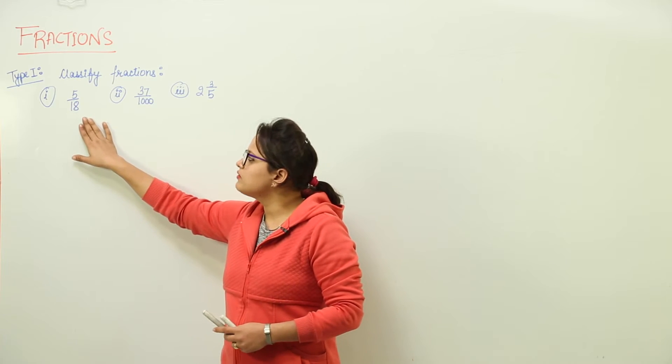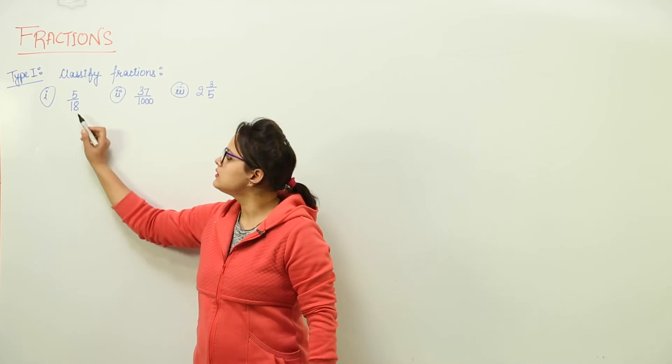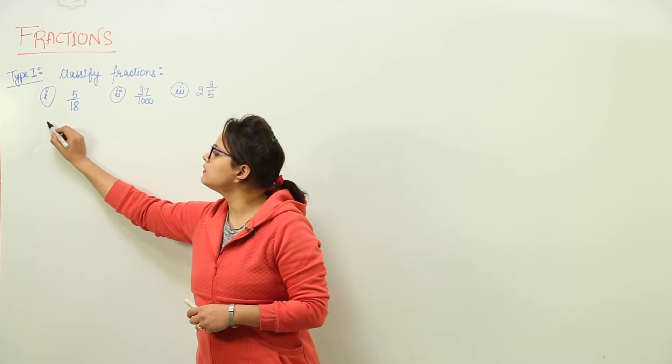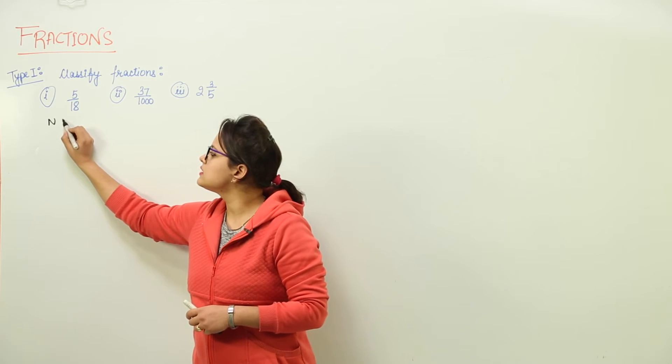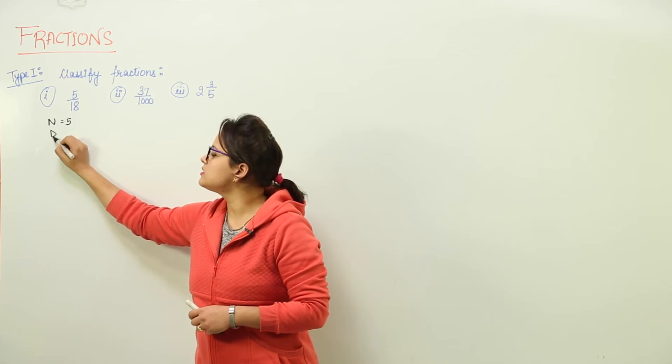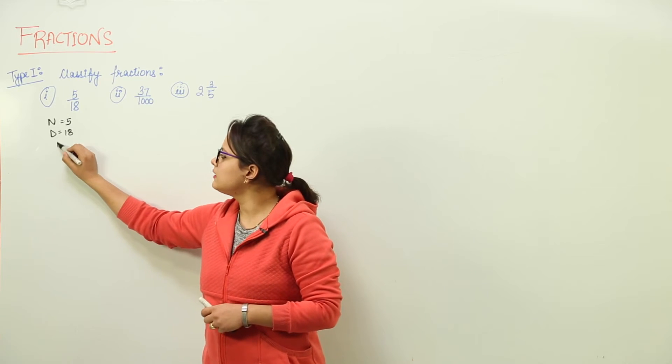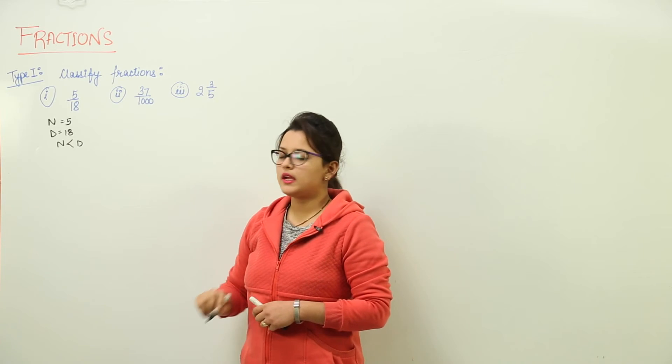The first one is 5 upon 18. Now, this is a fraction that is having a denominator and a numerator. Here the numerator is 5 and the denominator is 18. We can clearly see over here that the numerator is less than the denominator.